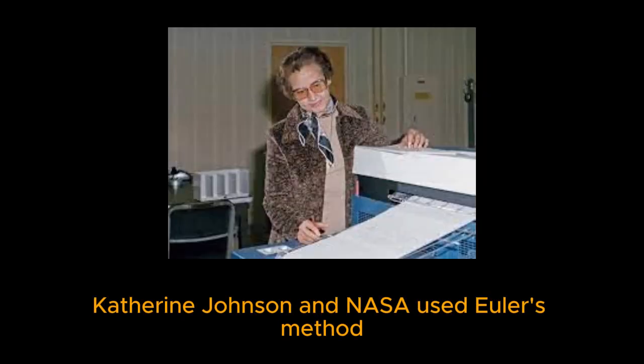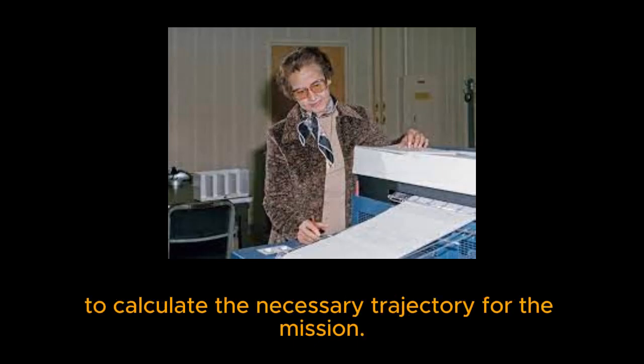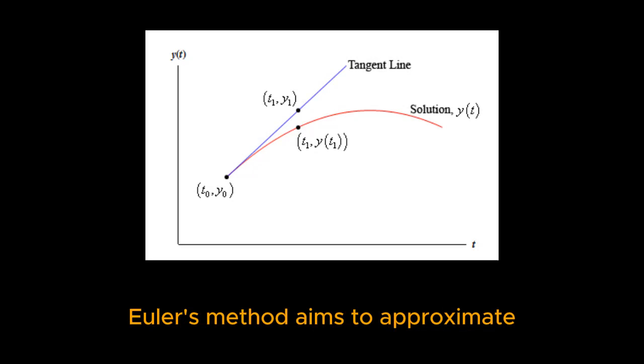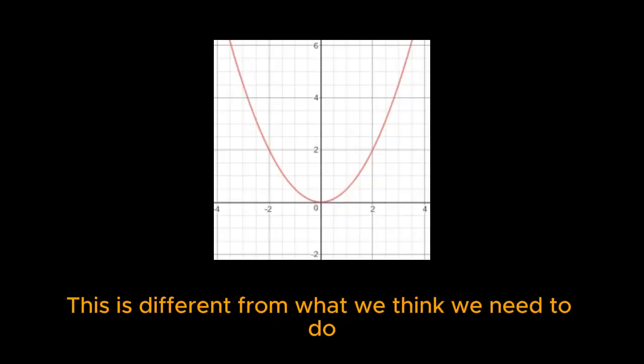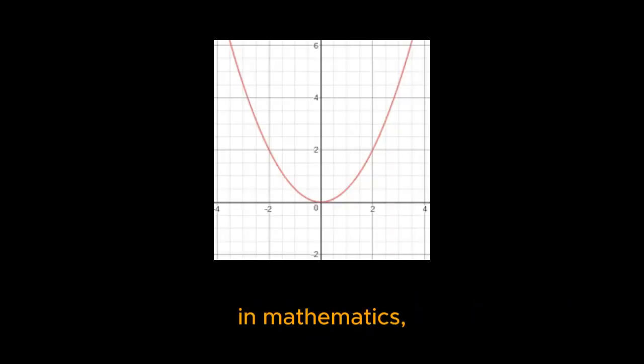Katherine Johnson and NASA used Euler's method to calculate the necessary trajectory for the mission. Euler's method aims to approximate the path that needs to be followed, but does not give us an exact formula for this trajectory. This is different from what we think we need to do in mathematics. We often are looking for an exact formula to describe a curve or relation.